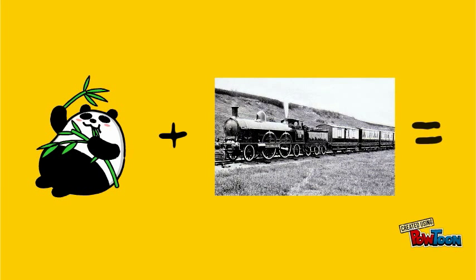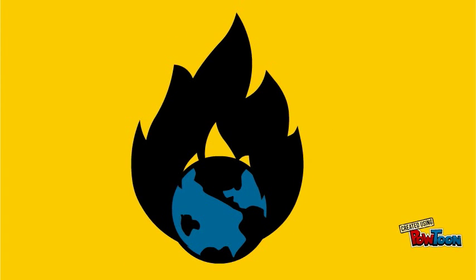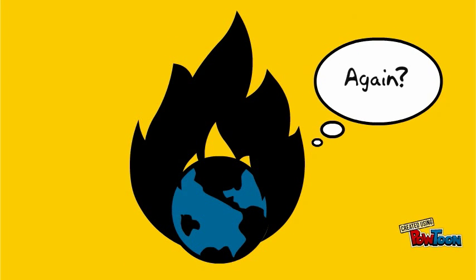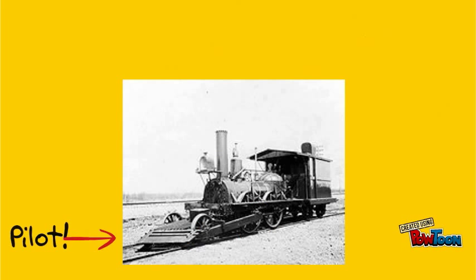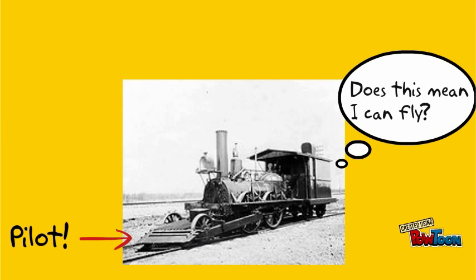To this day, objects obstructing the rails are tremendous hazards for trains and consequently anything and anyone around them. Prior to the use of the pilot, which is still used today even though it is in different shapes and made with different materials, the slightest obstacle on the track would spell disaster. We can all agree that a derailed train is an absolute horror, possibly resulting in millions of dollars of damage and massive loss of life.